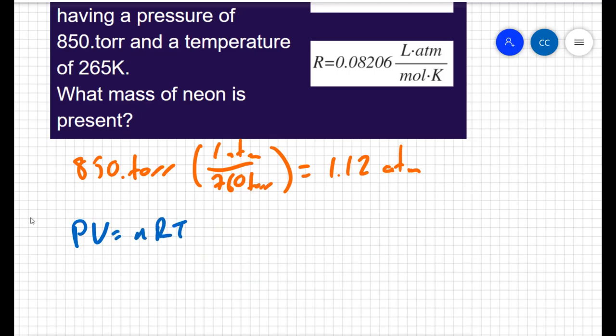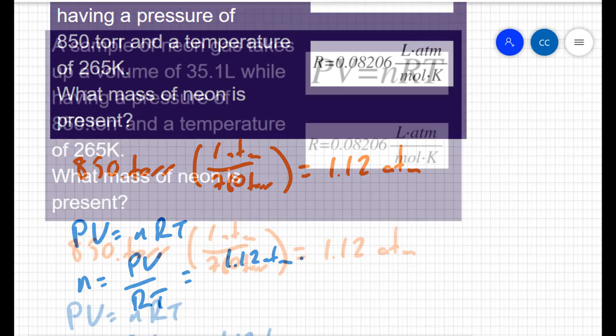The first thing I'm going to do is take my 850 torr and convert it to atmospheres. I know that one atmosphere is equivalent to 760 torr, and so I get a pressure of 1.12 atmospheres.